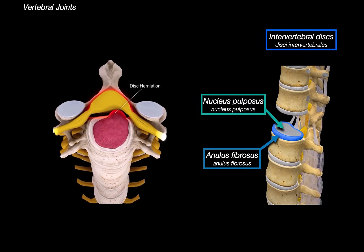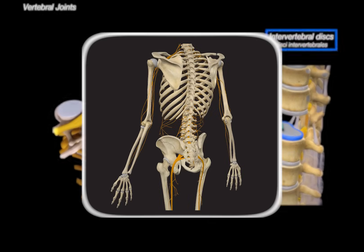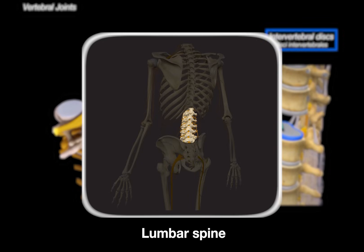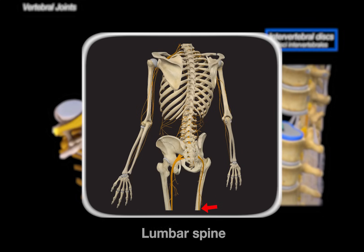This herniated material can compress nearby spinal nerve roots against the hard vertebrae. Depending on which nerve root is compressed, patients may experience pain, numbness, tingling or muscle weakness along the distribution of the affected nerve. For example, compression of a nerve root in the lumbar spine can cause symptoms down the leg — a condition commonly known as sciatica.